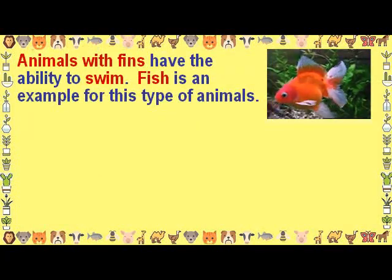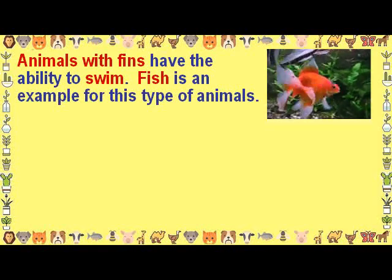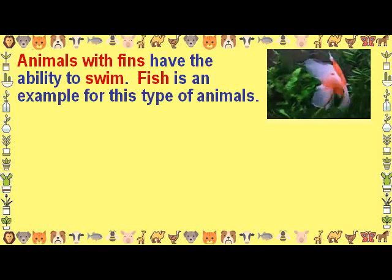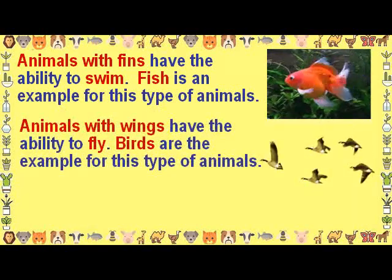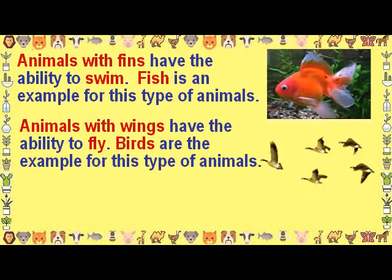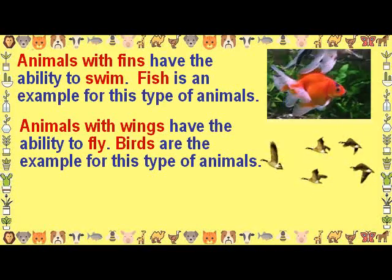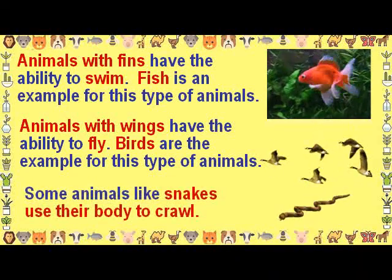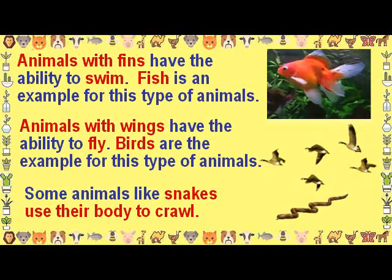Animals with fins have the ability to swim — fish is an example. Animals with wings have the ability to fly — birds are the example. Some animals like the snake use their body to crawl.